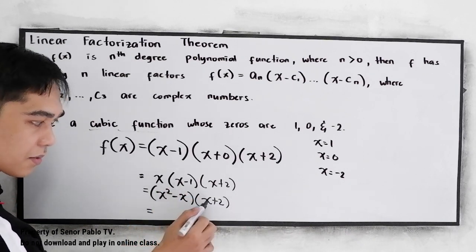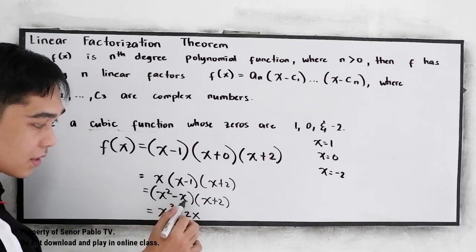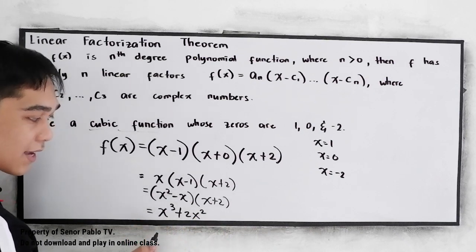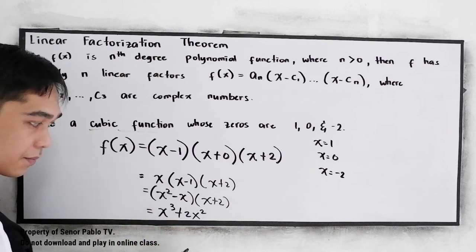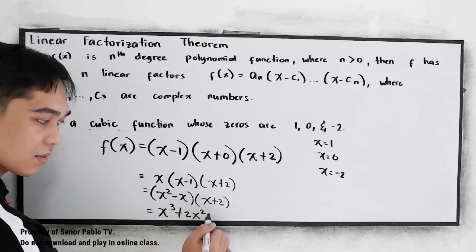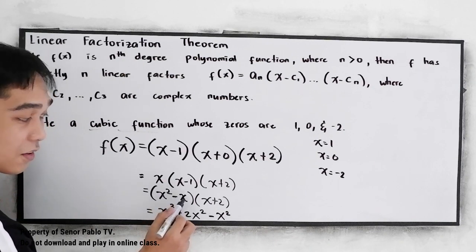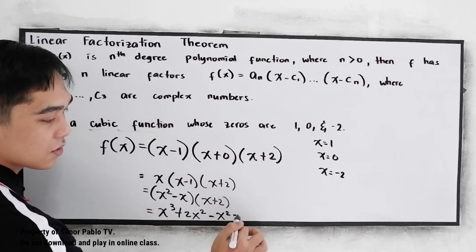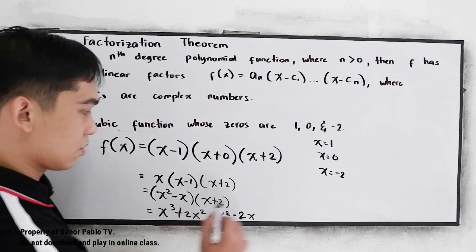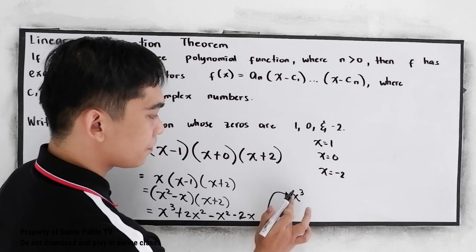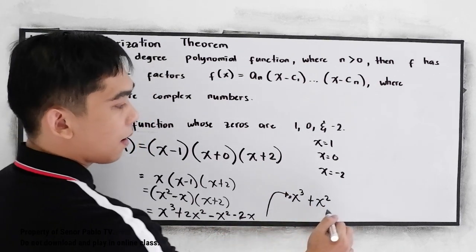Using the FOIL method: x squared times x gives x cubed. x squared times positive 2 gives positive 2x squared. Negative x times x gives negative x squared. And negative x times positive 2 gives negative 2x. Now combine like terms: we have x cubed, then 2 minus 1 gives positive x squared, and minus 2x.